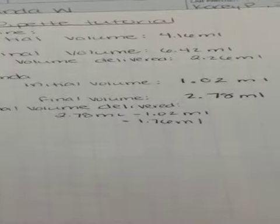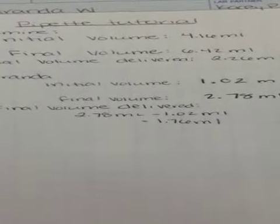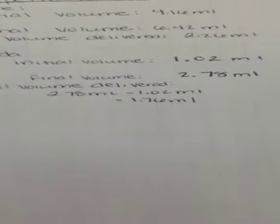Now you find the final volume delivered. The final volume delivered is the initial volume subtracted from the final volume, leaving the final volume delivered to be 1.76 milliliters.